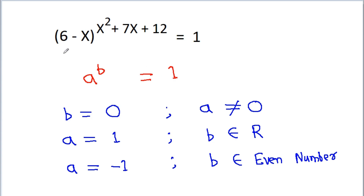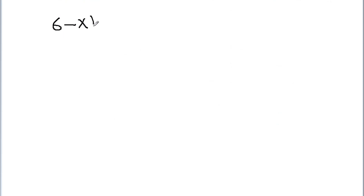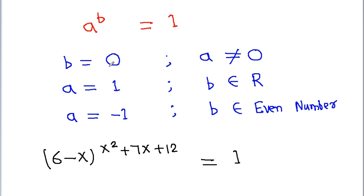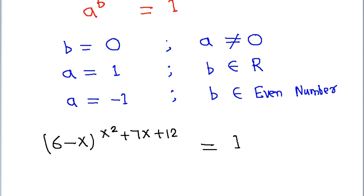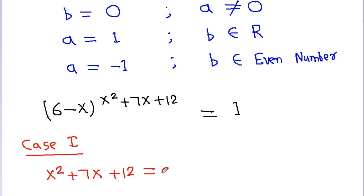The given problem is (6-x) to the power (x² + 7x + 12) = 1, which is in the form a^b = 1. So we need to take three cases. Case 1 is b = 0 and a ≠ 0, meaning x² + 7x + 12 = 0 and 6 - x ≠ 0.